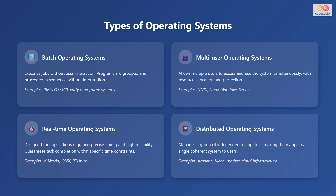Operating systems come in various types, each designed for specific purposes. Batch operating systems execute jobs without user interaction, processing programs in sequence without interruption; examples include IBM's OS/360 and early mainframe systems. Multi-user operating systems allow multiple users to access and use the system simultaneously, with resource allocation and protection; examples include Unix, Linux, and Windows Server. Real-time operating systems are designed for applications requiring precise timing and high reliability, guaranteeing task completion within specific time constraints; examples include VxWorks, QNX, and RT-Linux.